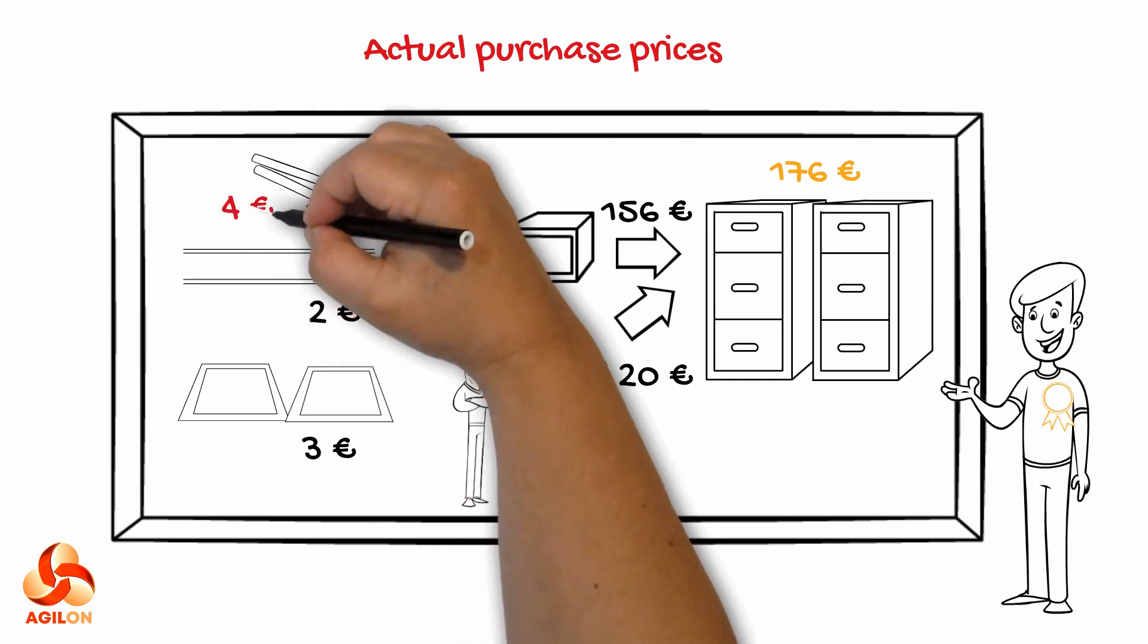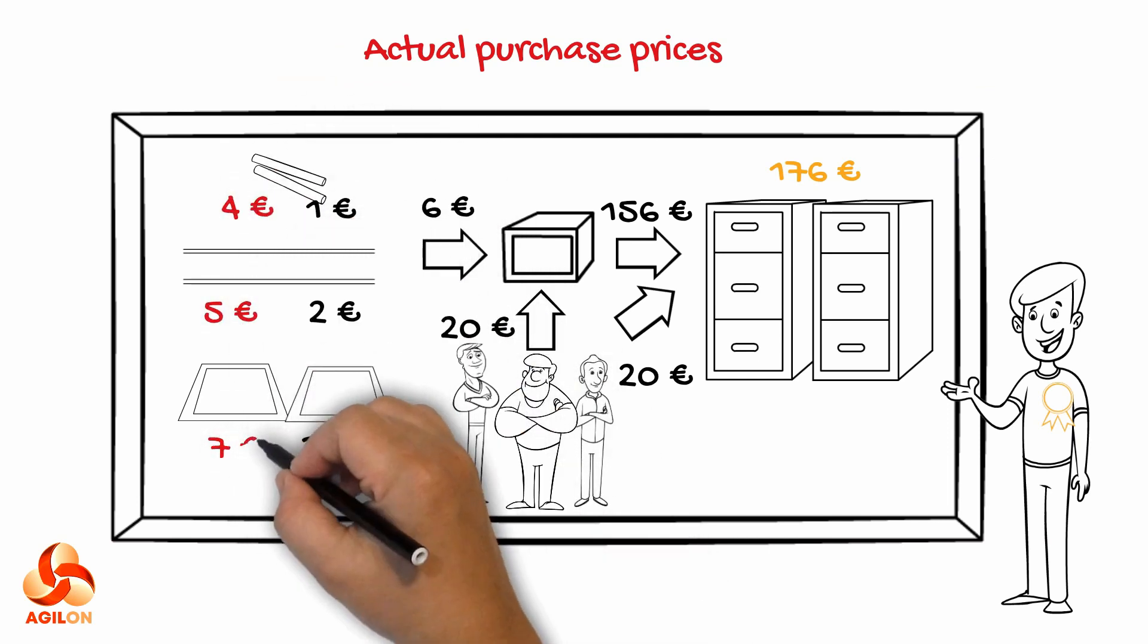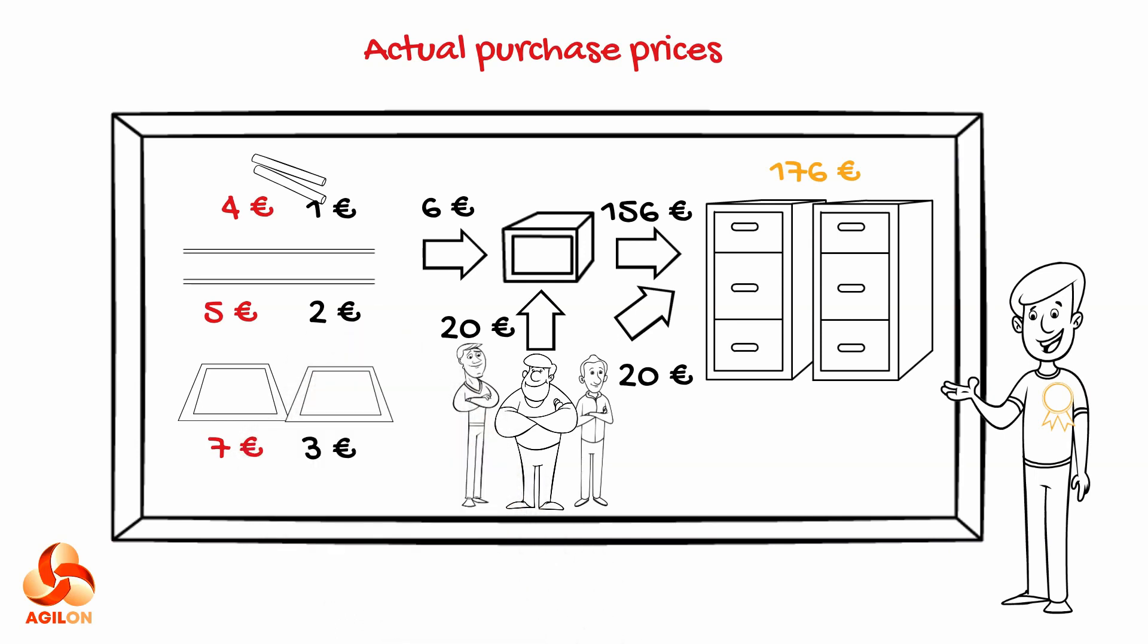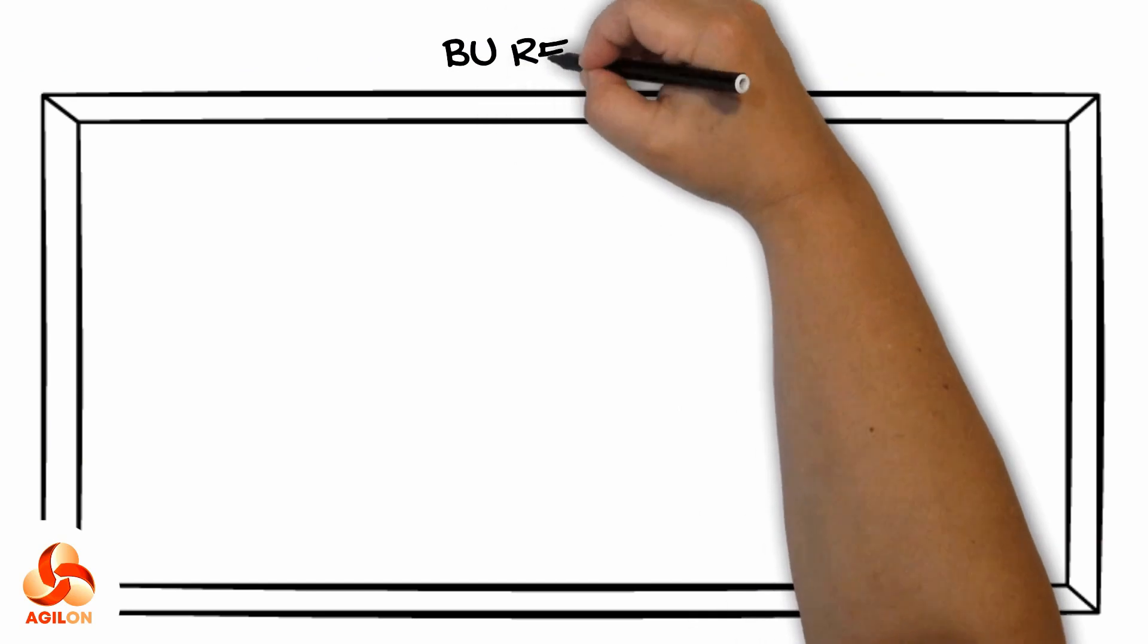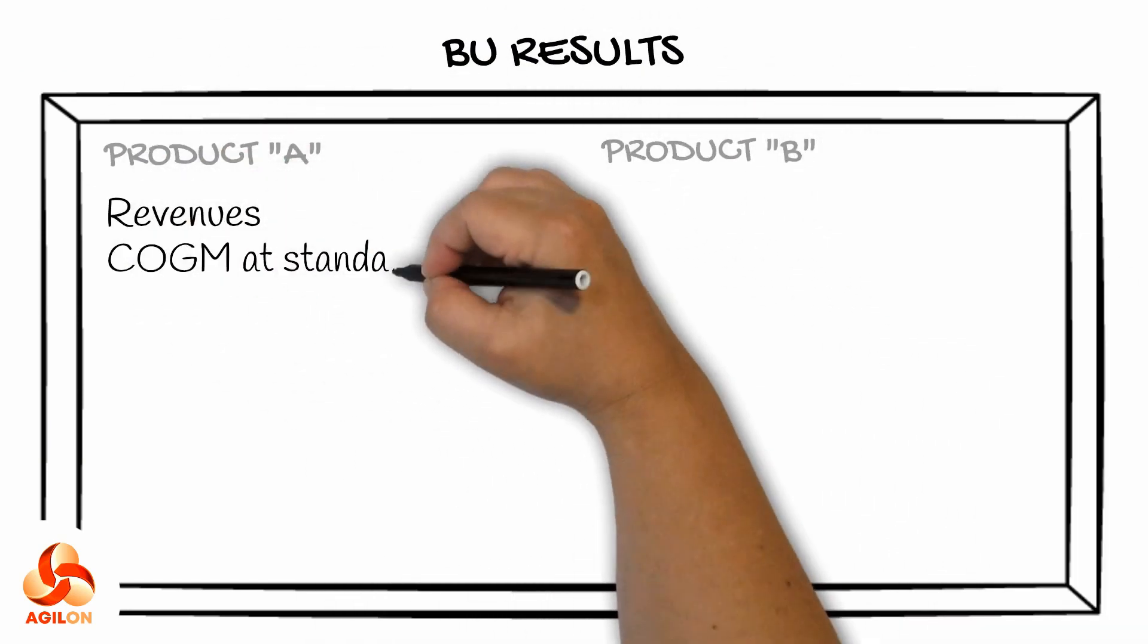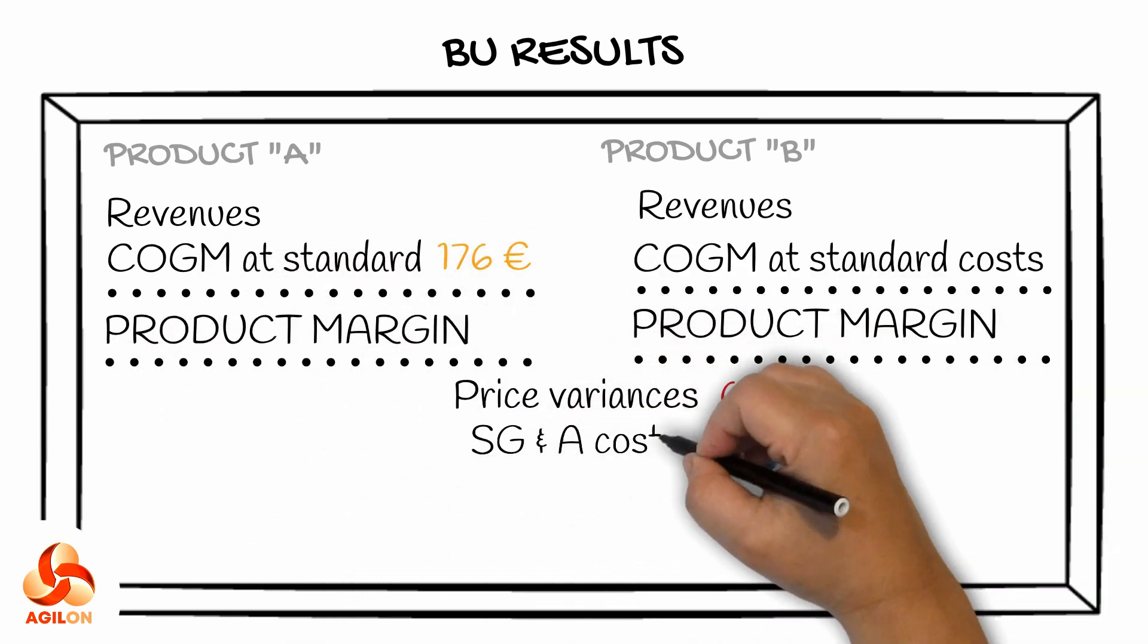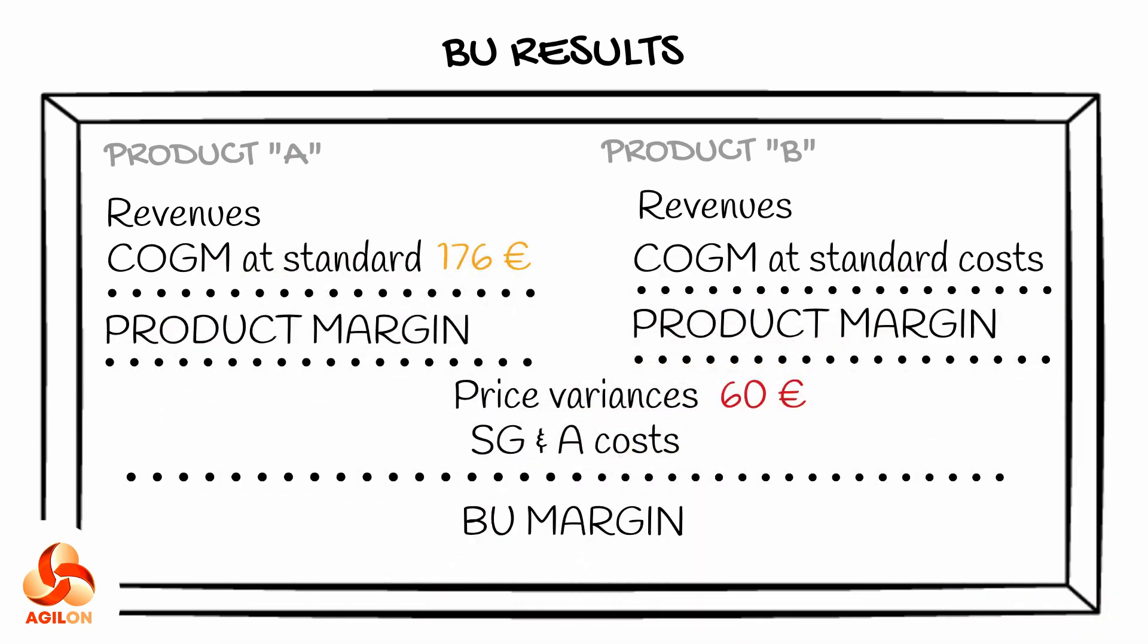If the purchase price of a consumed material varies from the standard price, that variance will not be allocated to semi-finished or finished materials. The BU results will show you product costs at the standard price of 176 euros, and the variance will appear as unassigned below product margins.